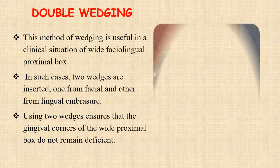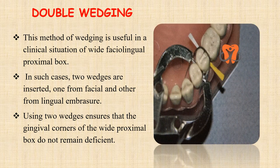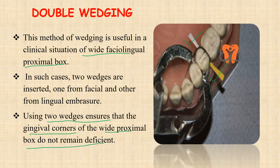Next is double wedging. This method of wedging is useful in the clinical situation of a wide facial-lingual proximal box. In the photograph, you will see that two wedges are being inserted — one from the facial side and the other from the lingual side. Using these two wedges ensures that the gingival corners of the wide proximal box do not remain deficient. That means these gingival corners will not remain deficient because there is a wedge present on either side.